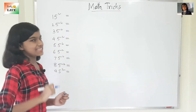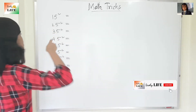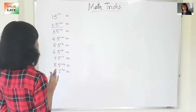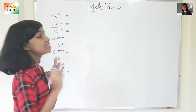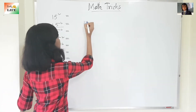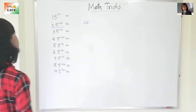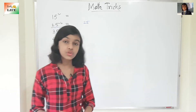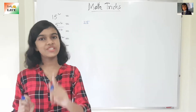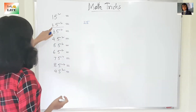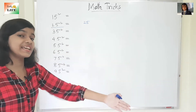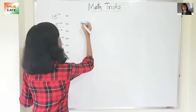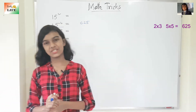Let's take the example of 25 square. Normally we multiply 25 into 25, but with the trick: first, 5 square is 25, so we write down 25. Now the digit in the tens place is 2. What is the successor of 2? It is 3. So we multiply 2 by its successor 3: 2 into 3 is 6. So 25 square is 625. Isn't it very easy?